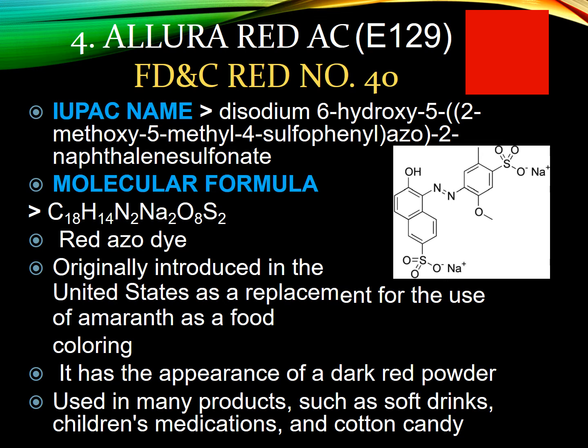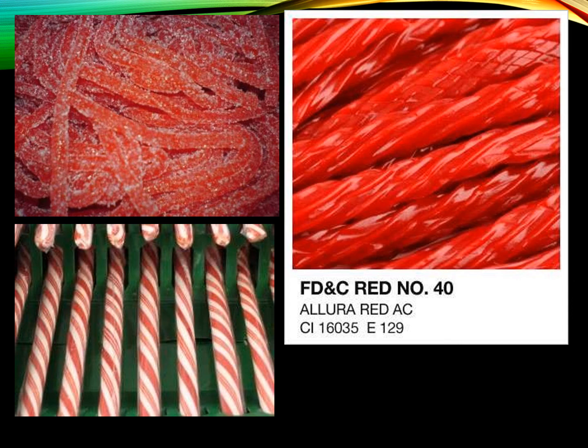Allura Red, FD&C Red No. 40, has the E number E129. It comes under the group azo dyes. It was originally introduced in the United States as a replacement for amaranth, which was a red food coloring used earlier. It has the appearance of a dark red powder and is used in many food products like soft drinks, children's medicine, cotton candy, and confectionery products.